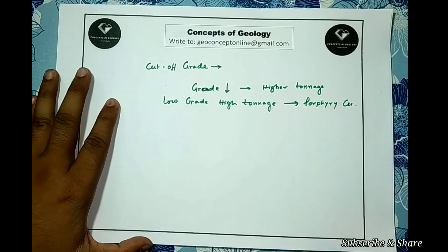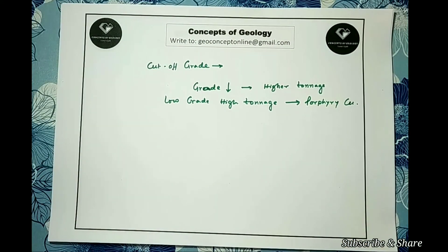So here the tonnage is more, means my cost of mining will be more, and so the cutoff grade needs to be higher. Note, I am not saying that low grade deposits have higher cutoff grade; I am only saying the ratio of cutoff grade to grade will be higher in comparison to a high grade low tonnage deposit.